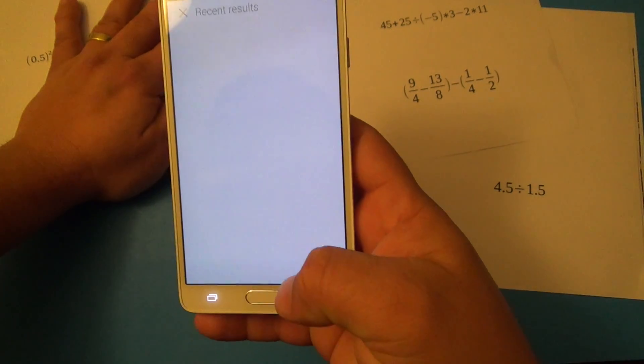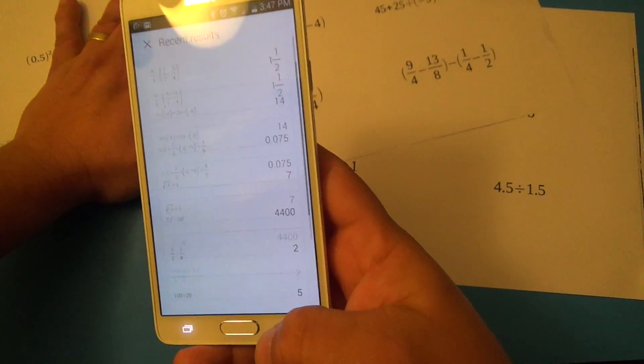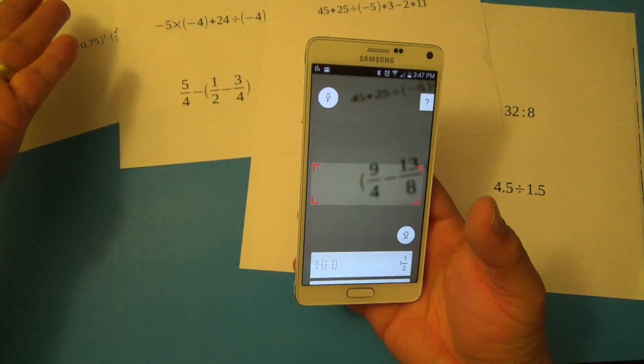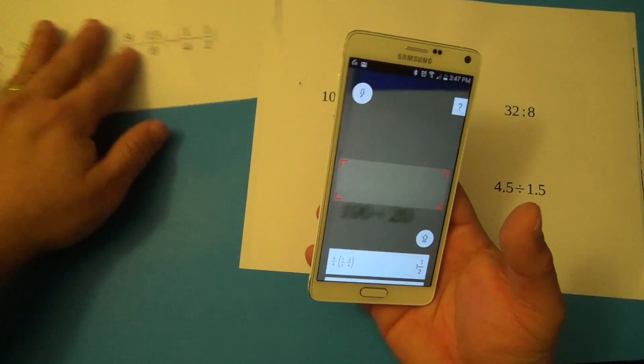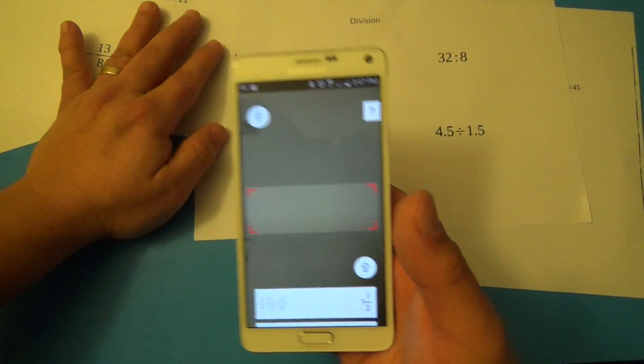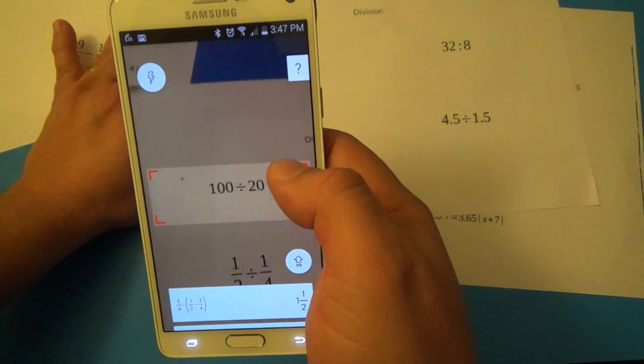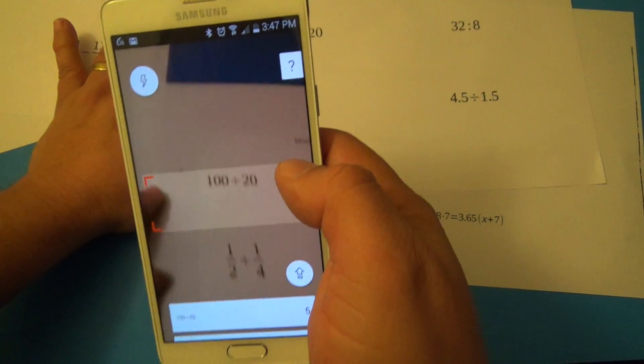These can be considered complicated math problems, and of course simple problems like division and subtraction—it would just shred through them very easily.